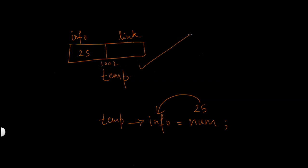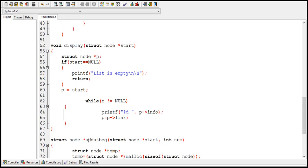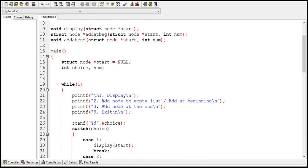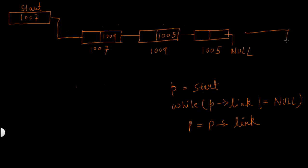This is the new node which is created, and now I need to add it at the end of the linked list. Remember, there should be at least one node in the linked list if you want to add a node at the end. You cannot add a new node at the end of an empty list. That is why I created the add back function first — to add a node to an empty list. After that, you can add nodes at the end. To add a node at the end, you have to reach the last node first by traversing the list.